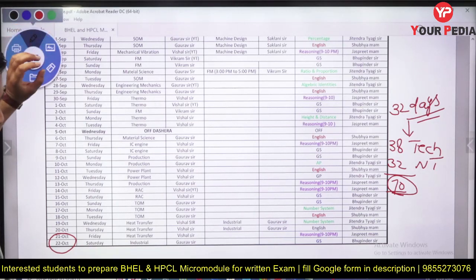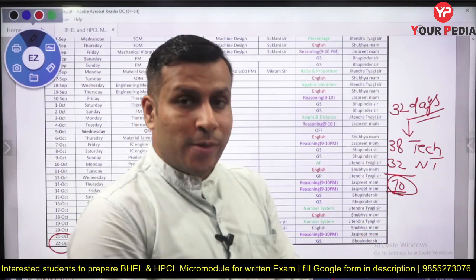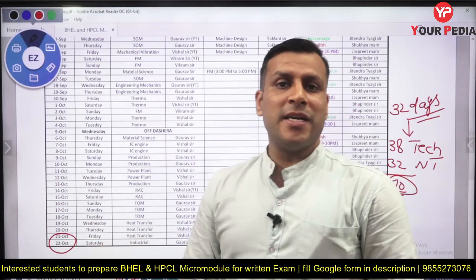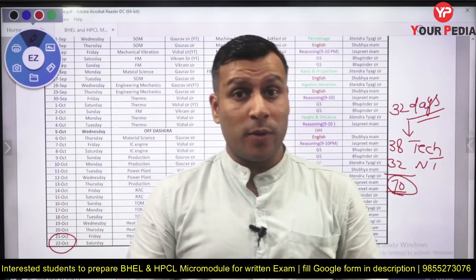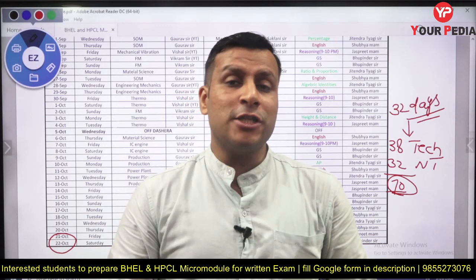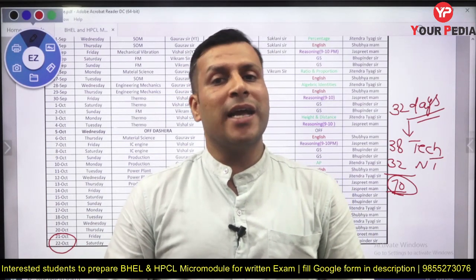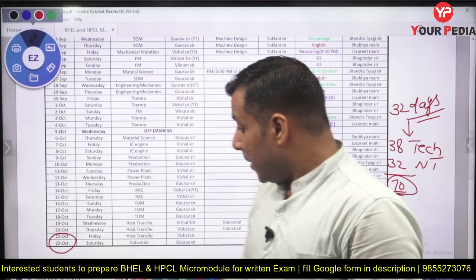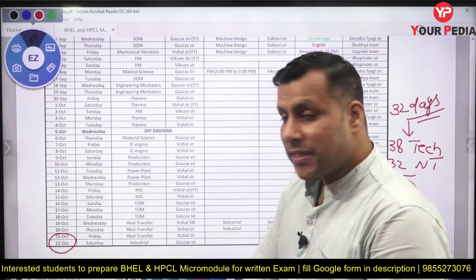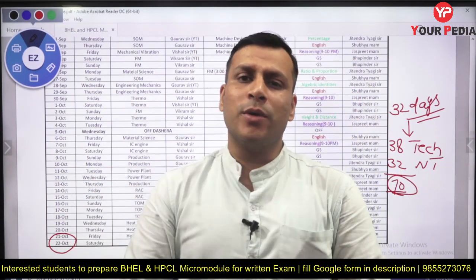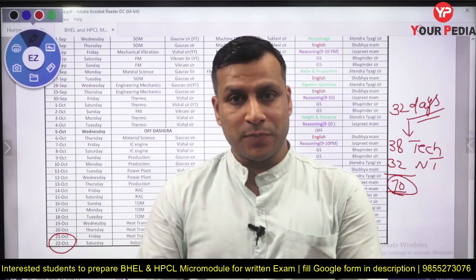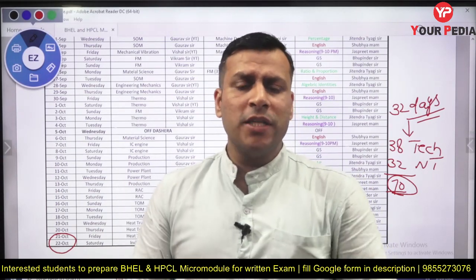We are starting from 20th September and ending around 22nd October, so that you can celebrate Diwali — we need to finish before the 24th. BHEL is going to conduct their exam at the end of October, and HPCL at the beginning of November or end of October. After completing the module by 22nd October, you will be able to practice full-length tests, which are also part of both modules.